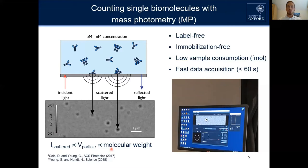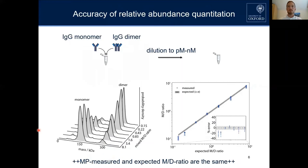What we were now first of all really interested in was a benchmark experiment to see how accurately our counting actually represents the in-solution distribution. For this purpose, we had an IgG monomer and an IgG dimer. We initially thought we were unlucky because the protein expression yielded so many oligomers, especially dimers, but it actually turned out to be really beneficial for this paper.